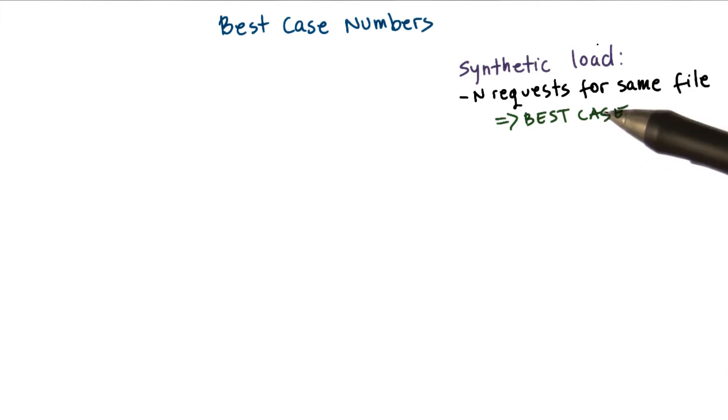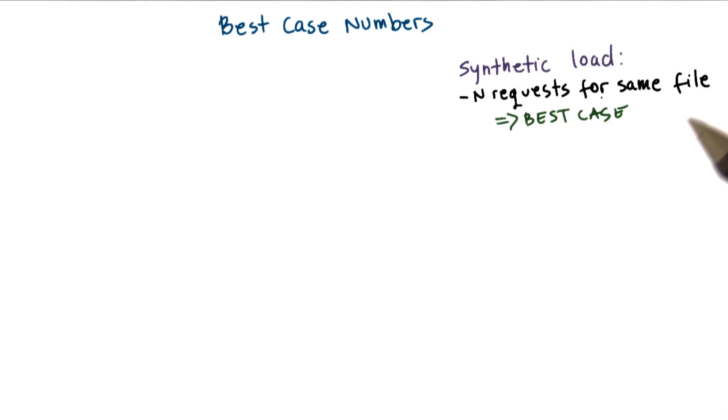This is the best case because really in reality, clients will likely be asking for different files. And in this pathological best case, it's likely basically the file will be in cache. So every one of these requests will be serviced as fast as possible. There definitely won't be any need for any kind of disk IO.